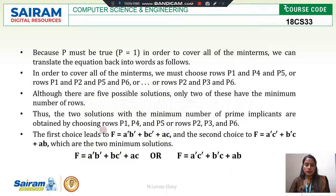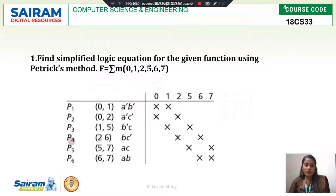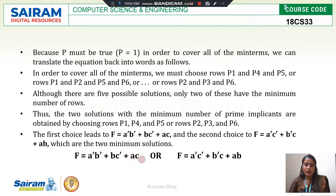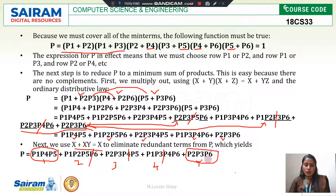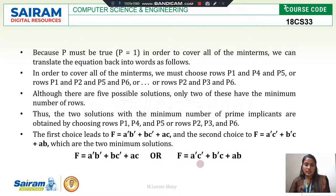We will now express these in Boolean form. P1 is A̅B̅, P4 is BC̅, P5 is AC. So the first answer is: A̅B̅ + BC̅ + AC. The second solution is P2, P3, P6: P2 is A̅C̅, P3 is B̅C, P6 is AB. So the second answer is: A̅C̅ + B̅C + AB. These are the two minimum sum-of-products solutions.